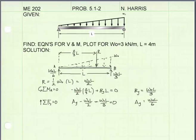The next step is to make a theoretical cut in the beam at a distance x and solve for the internal shear and moment. Because there are no internal point loads or any change in loading between the supports, there are no discontinuities in our shear and moment diagram, so we can describe the internal shear with a single function. The same is true for the internal moment, meaning we only need to cut the beam in one location.